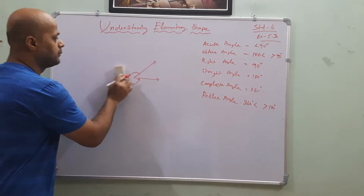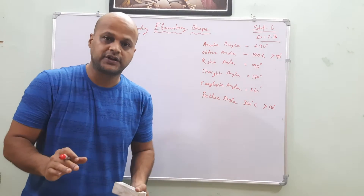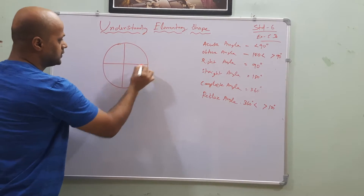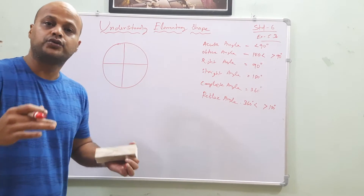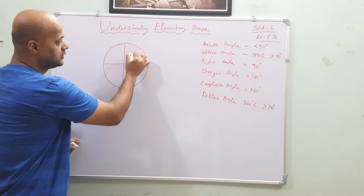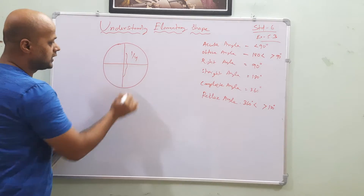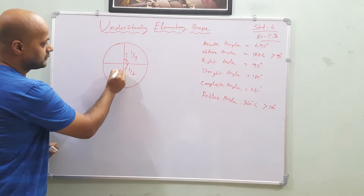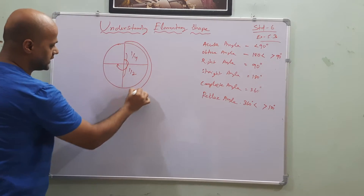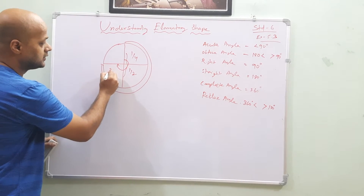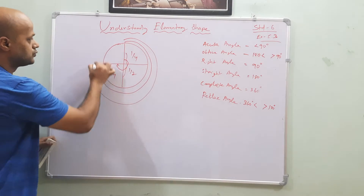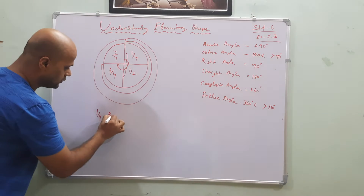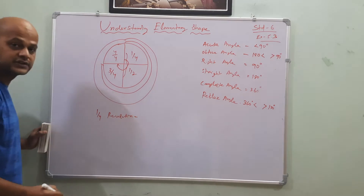Another thing we will discuss is revolution. What is revolution? If a circle or a clock face is divided into four parts, the first part is called one-fourth of the revolution. The total up to halfway is called one-half or half of the revolution. Up to three parts is called three-fourths of the revolution, and the total is called a complete revolution or 360 degrees.